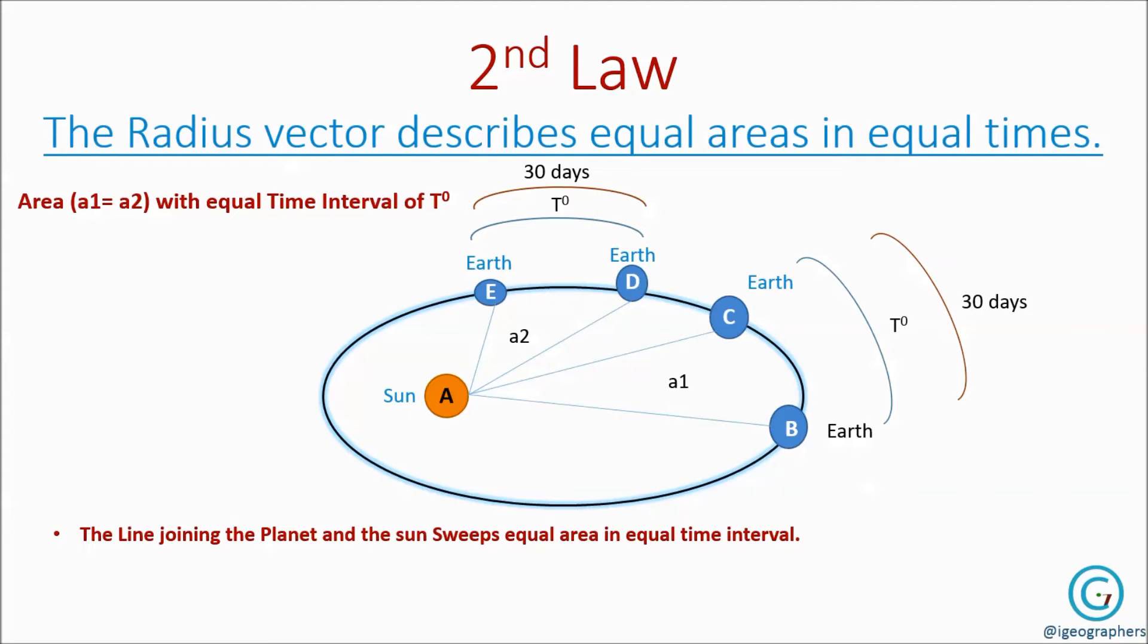But remember, the speed of a planet revolving around the sun is not always equal. If the planet is near to the sun, then the speed is more. And if the planet is far from the sun, then the speed is less.